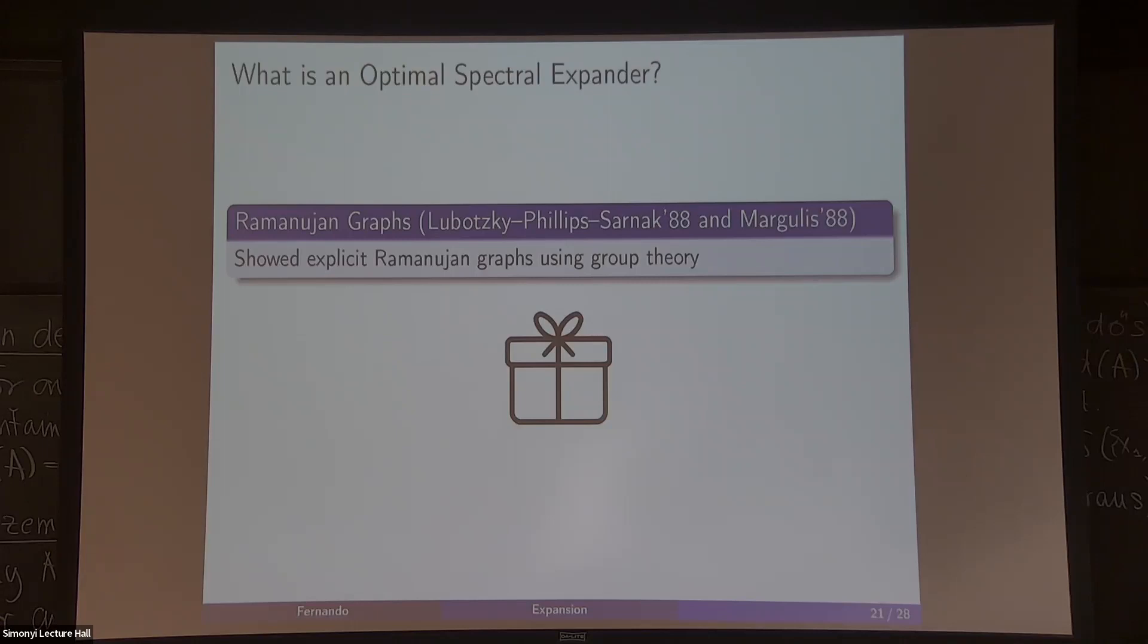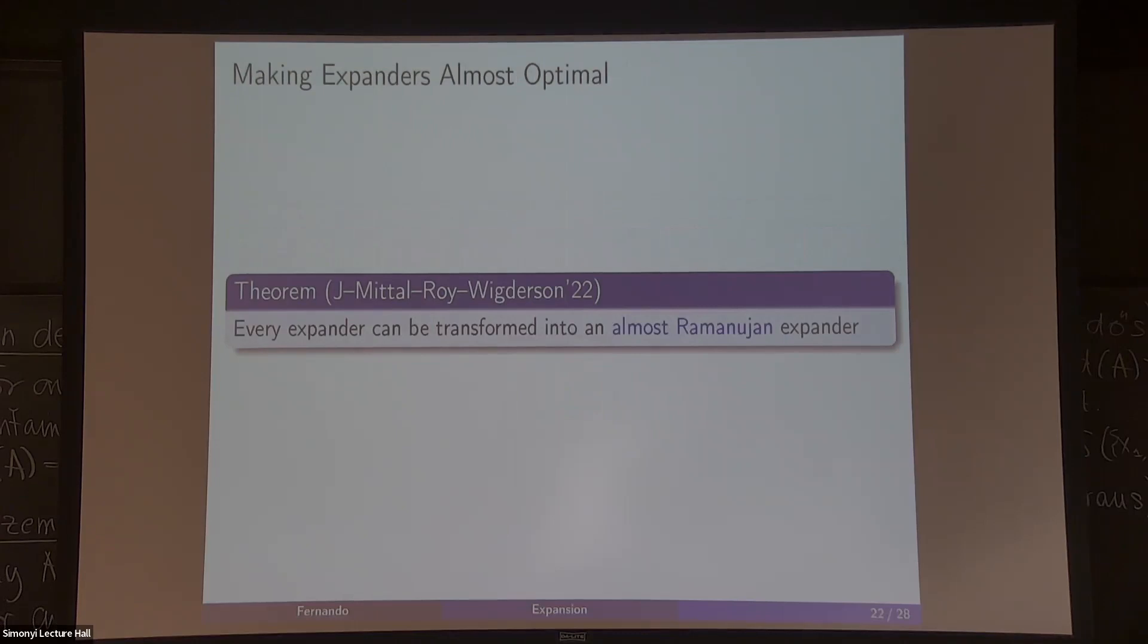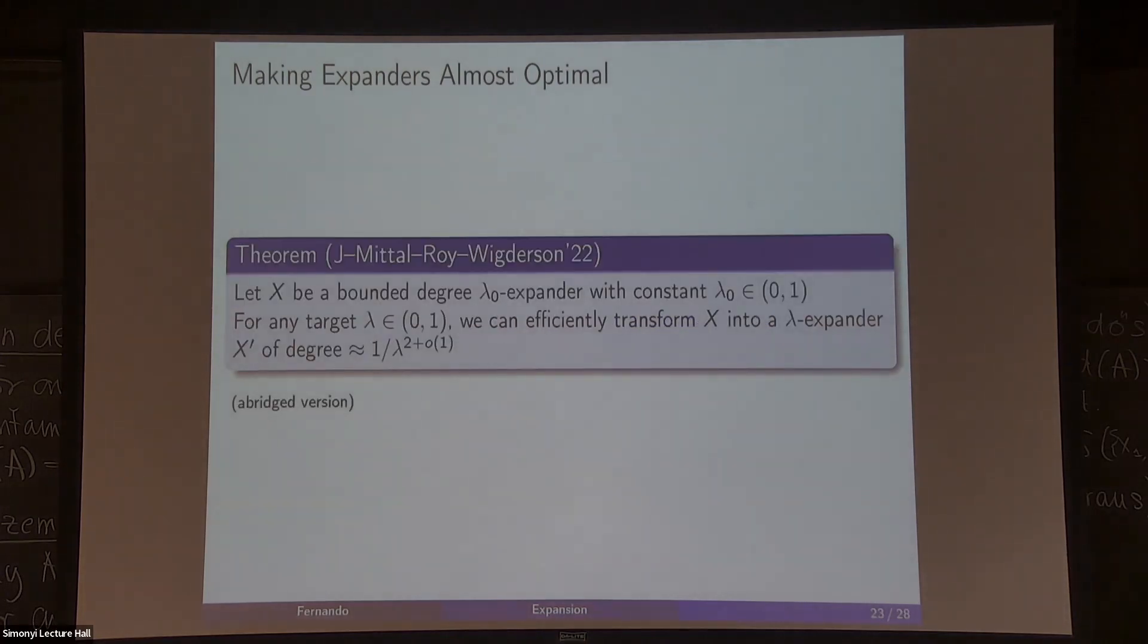They are the best of the best. Our theorem: what you're going to get is not exactly Ramanujan, exactly Ramanujan, but it's starting from an arbitrary expander you're going to get something that's almost Ramanujan in some sense that we need to quantify. Let's try to make more precise. When you talk about expanders, you really need to talk about an infinite family of graphs, but let's keep things simple. If you're given a bounded degree expander graph, let's say that this lambda is a constant, and for any target lambda, any target expansion that you want to achieve, you can transform this input expander into a new one in a way that it becomes a lambda expander that you want, and the degree is about quadratically off, so it's one over lambda squared plus some little term.